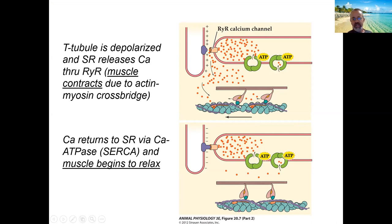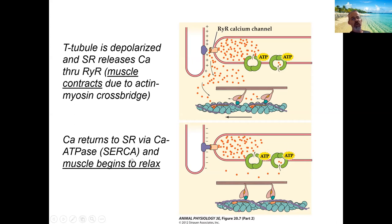After contraction, the muscle needs to return to homeostasis. The calcium that was released from the sarcoplasmic reticulum needs to come back in. It's pumped back into the sarcoplasmic reticulum through a protein known as calcium ATPase, also known as SERCA — the sarcoplasmic reticulum calcium ATPase. SERCA pumps the calcium back in, and now we're ready for the next contraction.